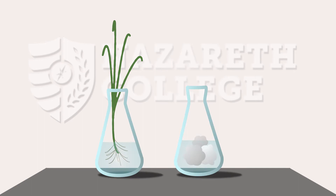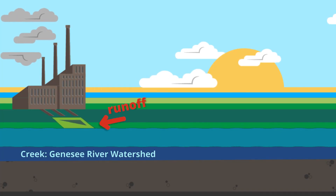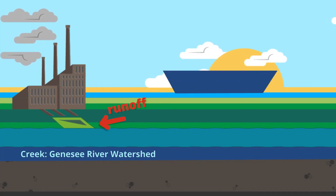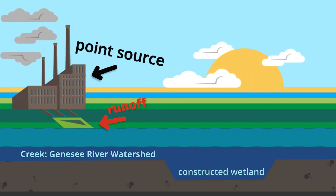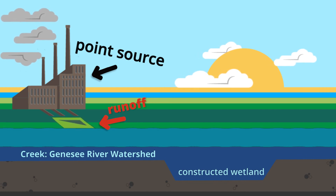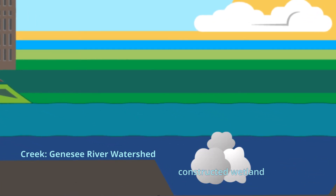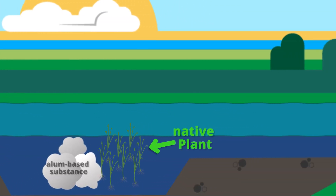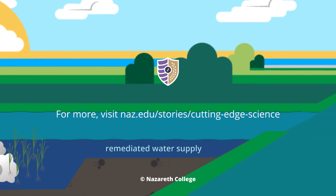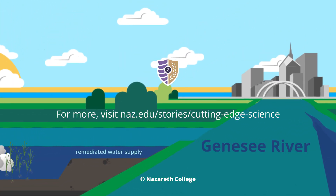We're now looking to build what we call a constructed wetland, which is essentially a man-made pond, specifically around what we call point sources. A point source is anywhere we can pinpoint that one place as increasing the nutrient level. We put in the native plant and alum substance and flow water through there to take up the phosphorus and nitrate before it's allowed to enter the waterways.